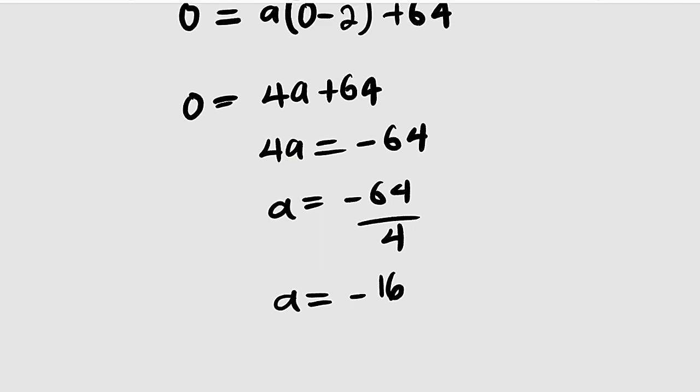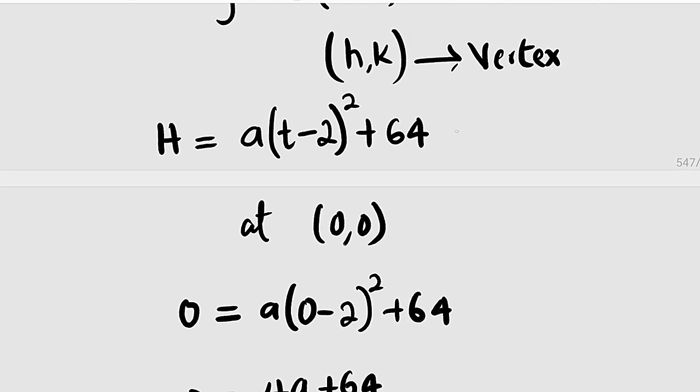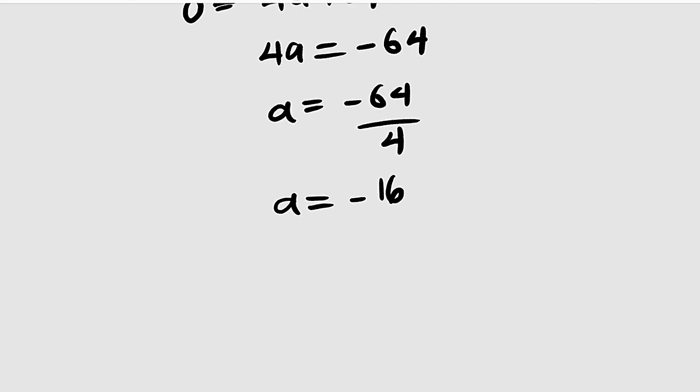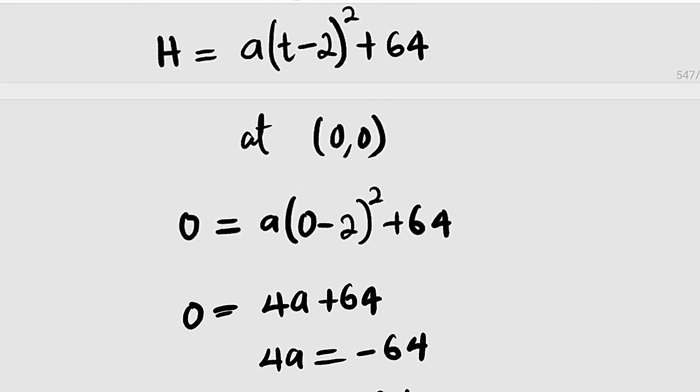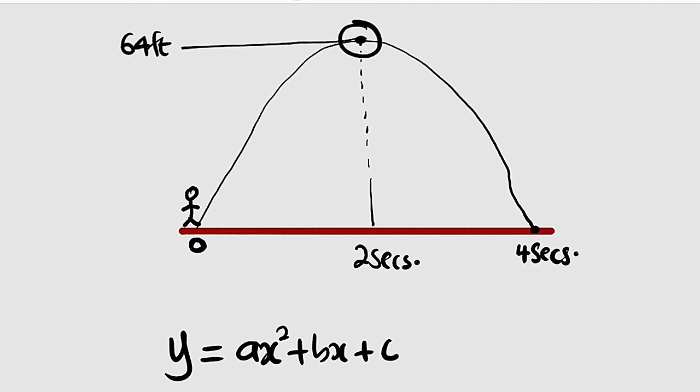So now let us plug in a into this vertex form of our parabola. So h, which is a function of time, is equal to a, which is negative 16, multiplied by t minus 2 all squared, then plus 64. So this is the relationship between the height and the time. And if you expand this, you are going to obtain that quadratic equation which we have used to form this graph. Let us do it as a bonus.